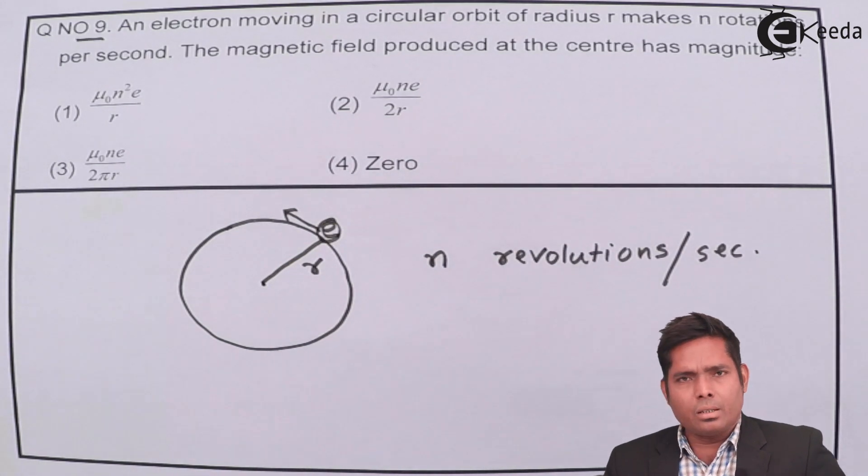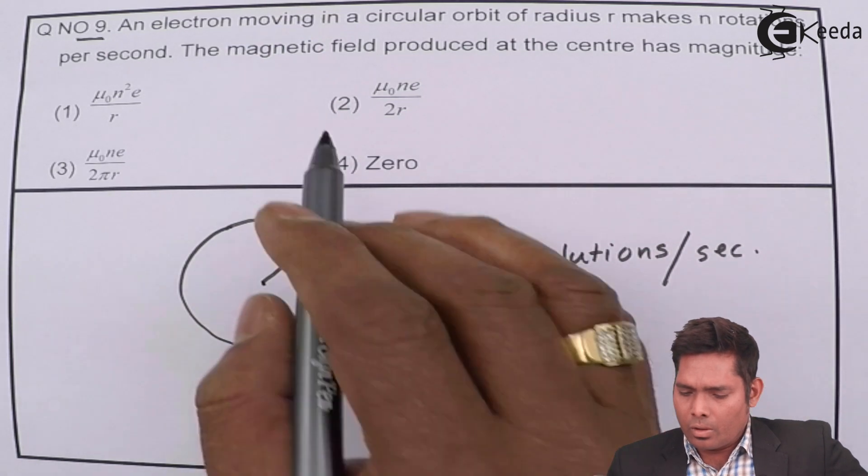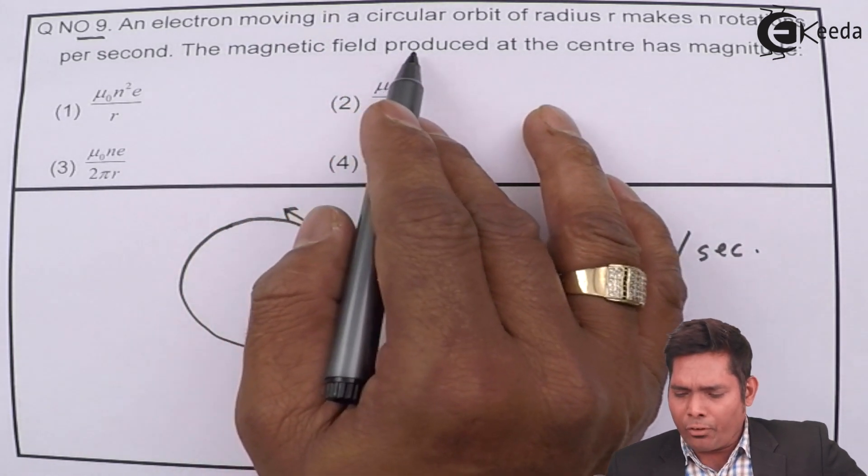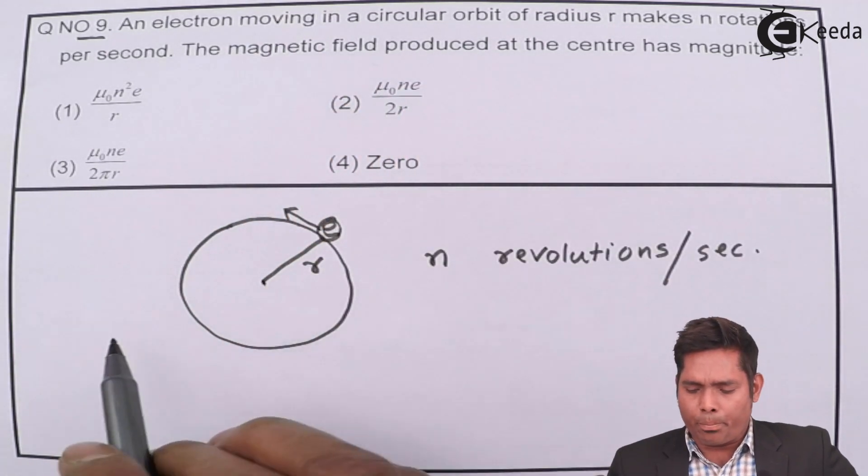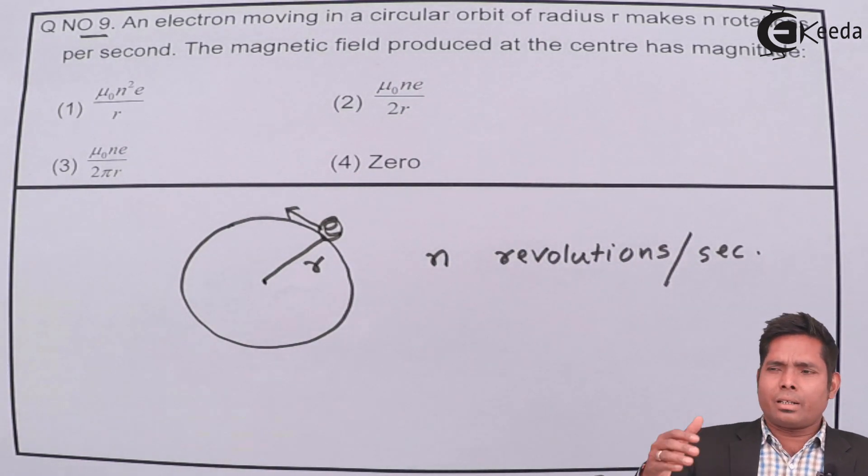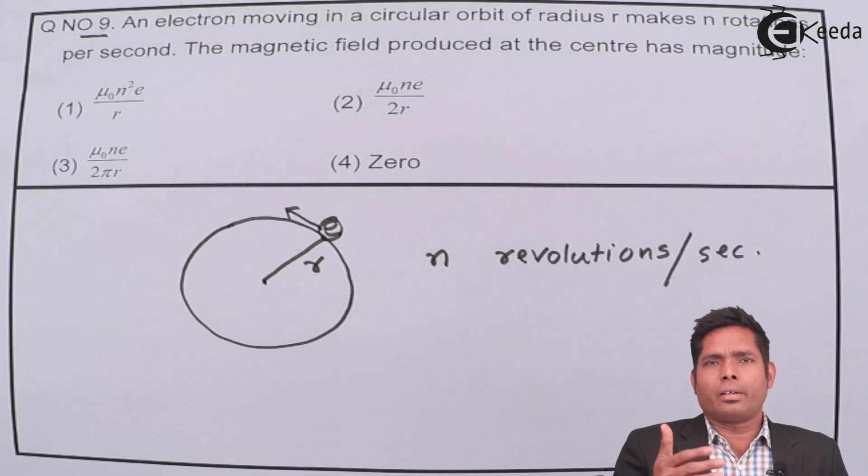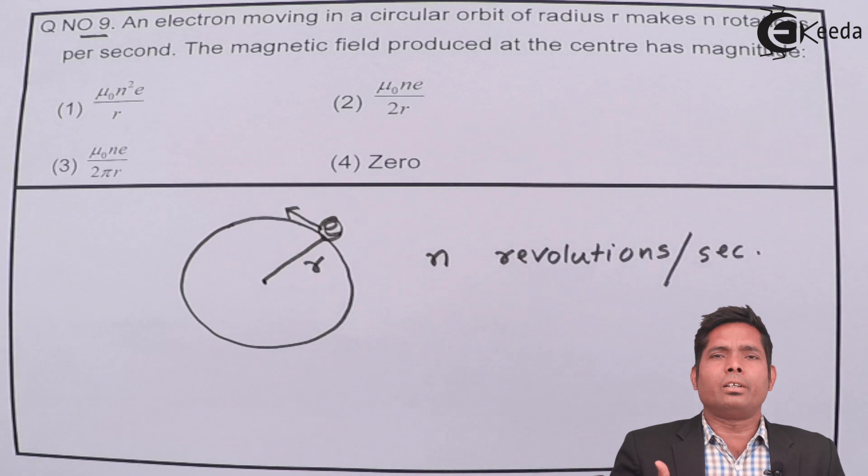So its frequency is n. The magnetic field produced at the centre. So, whether it will produce magnetic field? Now, we know that a current carrying coil or a current carrying wire produces magnetic field around it.